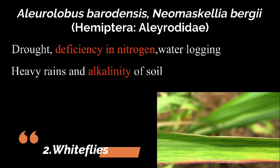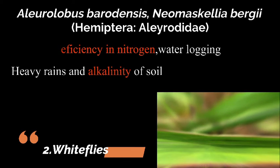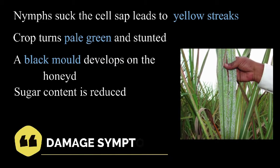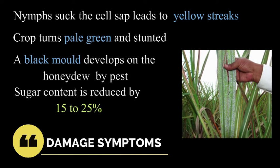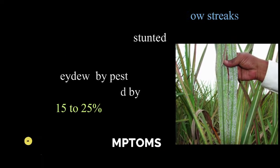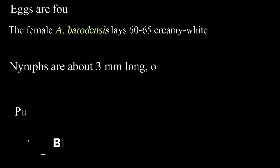Whiteflies: Aleurolobus barodensis and Neomaskellia bergii, which belong to the family Aleyrodidae and order Hemiptera. Whiteflies occur abundantly under conditions of drought, deficiency in nitrogen, waterlogging, heavy rains, rationing of canes, and alkalinity of soil. Damage symptoms: nymphs suck the cell sap, leading to yellow streaks; the crop turns pale green and stunted. A black mold develops on the honeydew and the sugar content in the cane is reduced by 15 to 25 percentage.